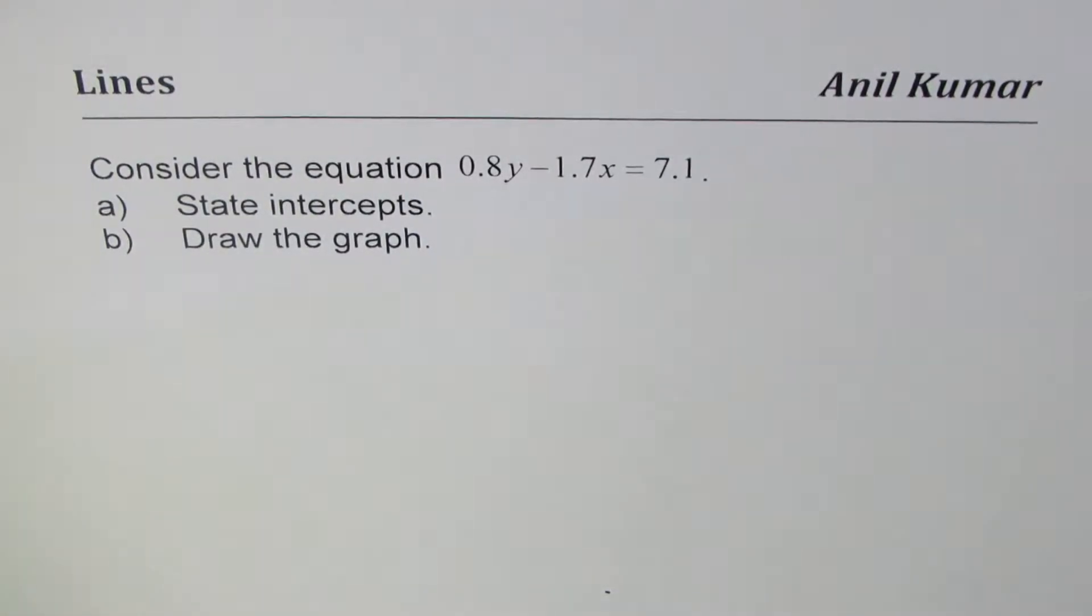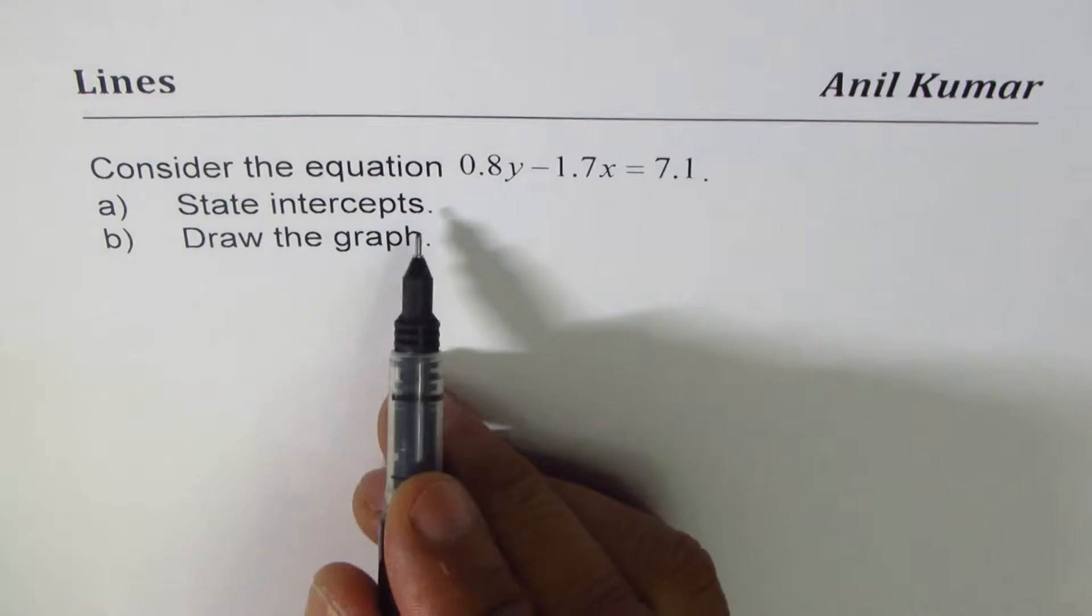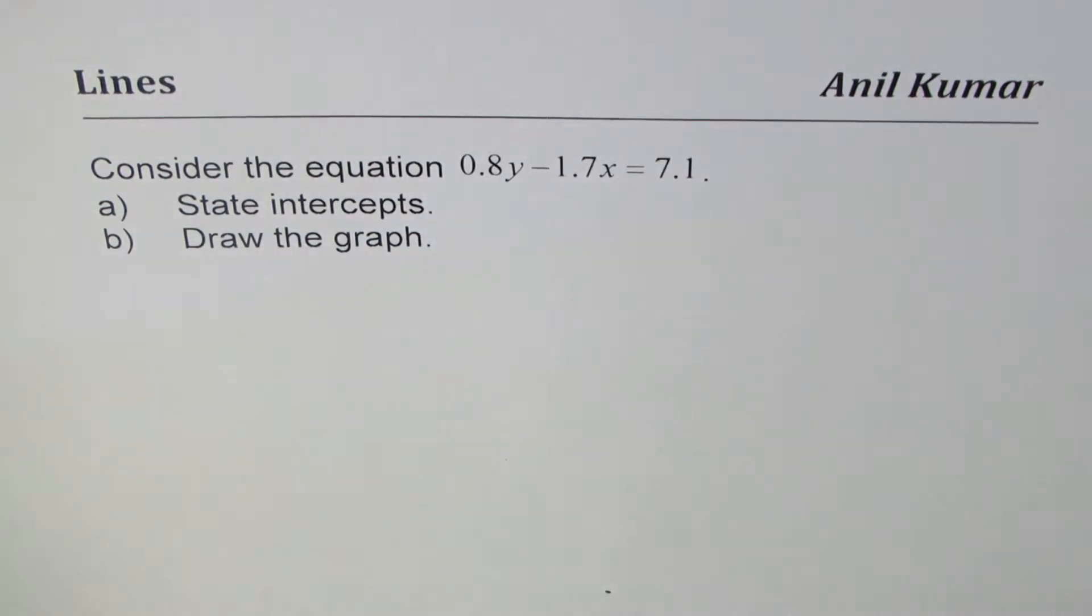I'm Anil Kumar and here is a question on lines from my subscriber. The question is: consider the equation 0.8y minus 1.7x equals 7.1. State intercepts and draw the graph.